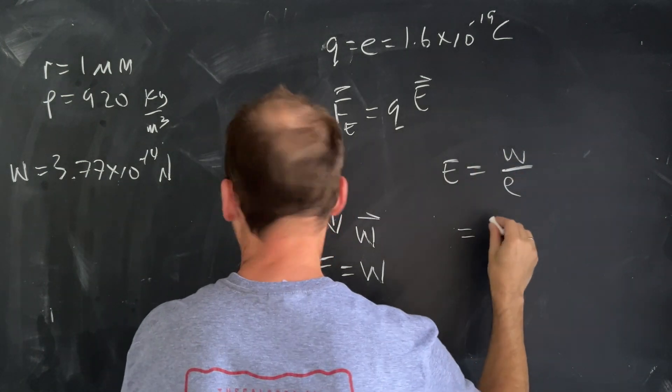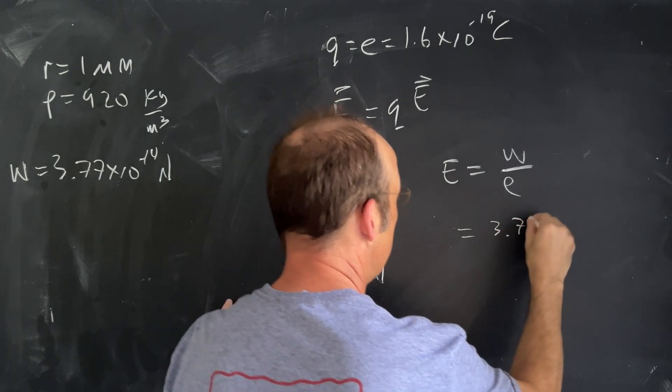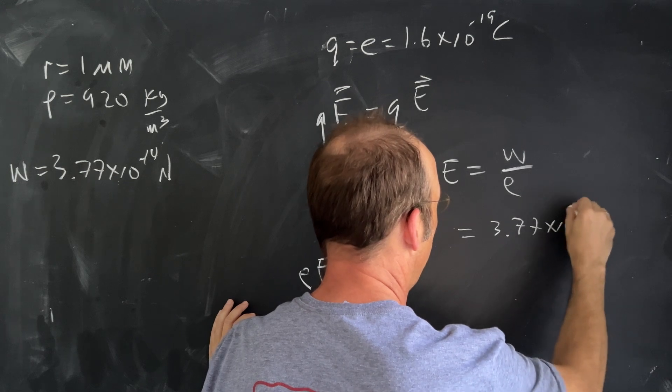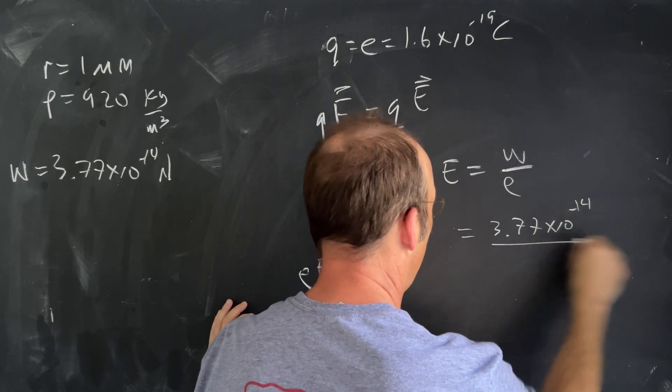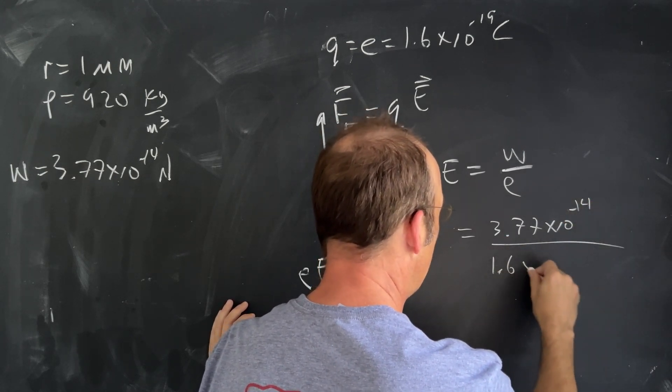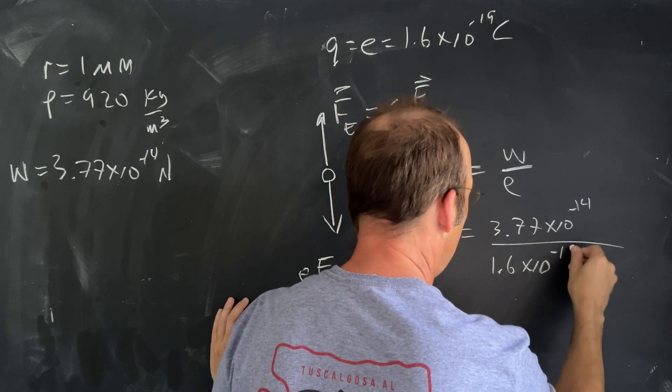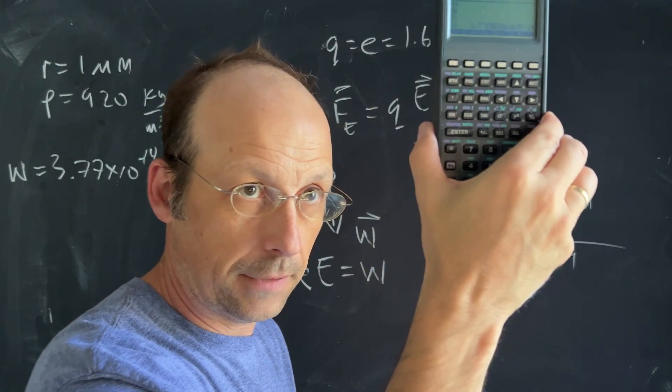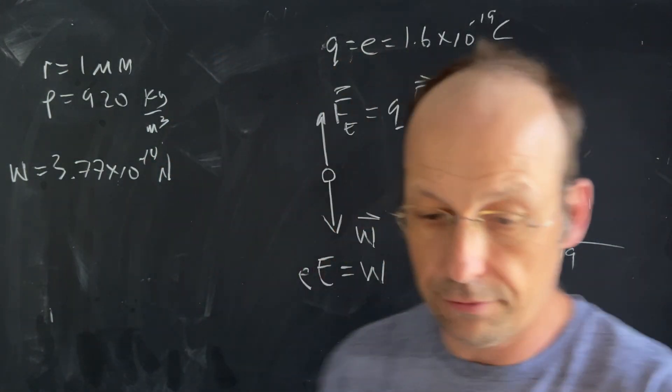Let's put in our numbers here: 3.77 times 10 to the negative 14 divided by 1.6 times 10 to the negative 19. Calculator time.